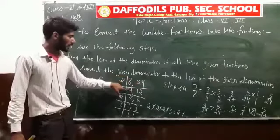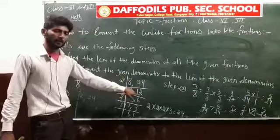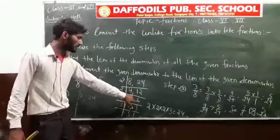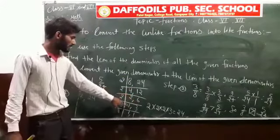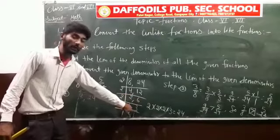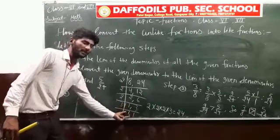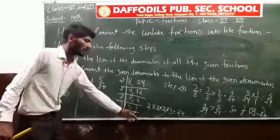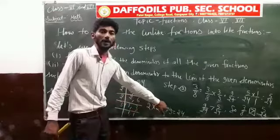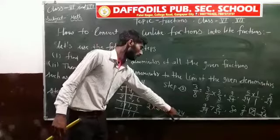Dividing by 2: 8 gives 4, and 24 gives 12. Divide by 2 again: 4 gives 2 and 12 gives 6. Divide by 2 again: 2 gives 1 and 6 gives 3. Now divide by 3: 3 gives 1. The product of these factors gives the LCM: 2 × 2 × 2 × 3 = 24.